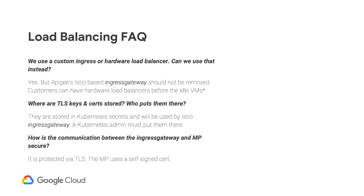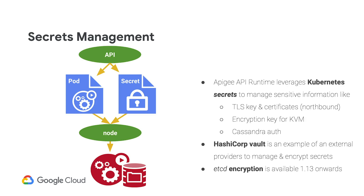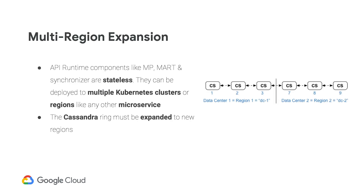Regarding secrets management: we use Kubernetes secrets to store encryption keys for encrypted KVM and cache encryption. All these secrets are in the Kubernetes secret store. On GKE, I used an HSM to store encryption keys. If using Kubernetes 1.13, all information in etcd is also encrypted. For multi-region expansion: most components are stateless; the only stateful component is Cassandra, and you would expand by creating additional clusters and building a ring that spans multiple regions.